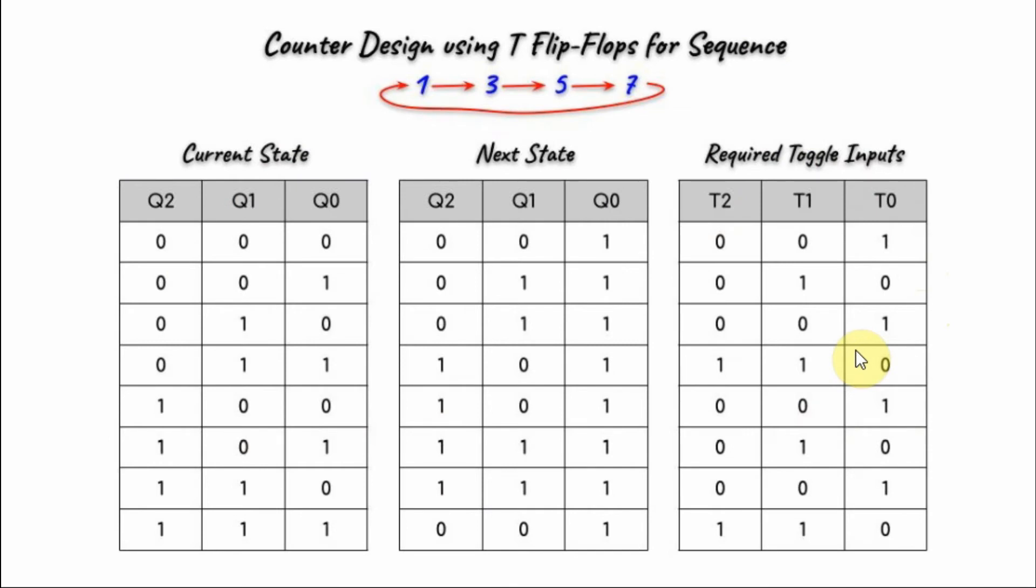This truth table represents the required inputs of the 3 flip-flops, based on the outputs from the current state and the next state. Keep in mind that for a toggle flip-flop, the output will toggle whenever the input is at logic 1. As an example, let's see how the T2 column is constructed by comparing the Q values from the current state with the next state.